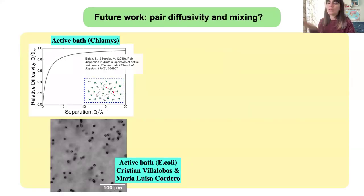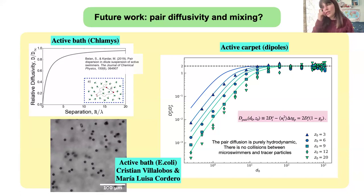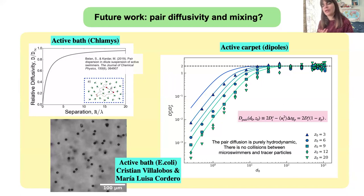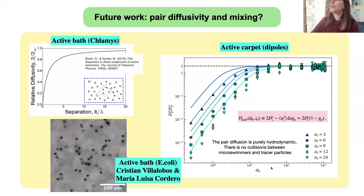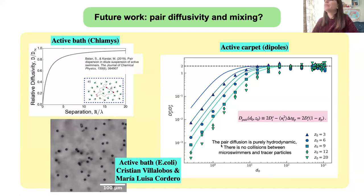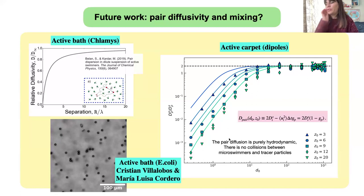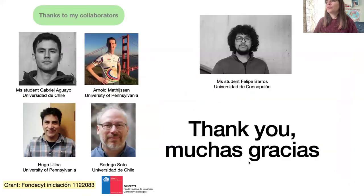This is the principal result. For future work, now that we know there are roll-like formations and heterogeneous particle dispersity, our active carpet may be generating mixing in the environment. We want to measure this in terms of paradiffusivity. We know an active carpet can generate paradiffusivity — demonstrated in another system with another student — and we would like to solve it for different film thicknesses and different lambda values. Thanks to my collaborators Arnold, Rodrigo, and Hugo, and my two students Gabriel and Felipe, and thanks for your attention.